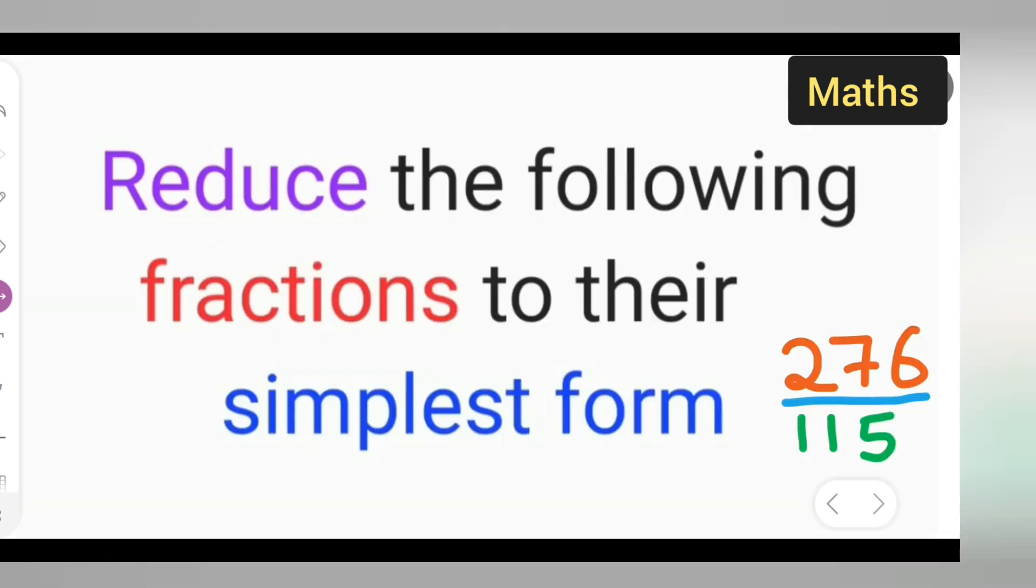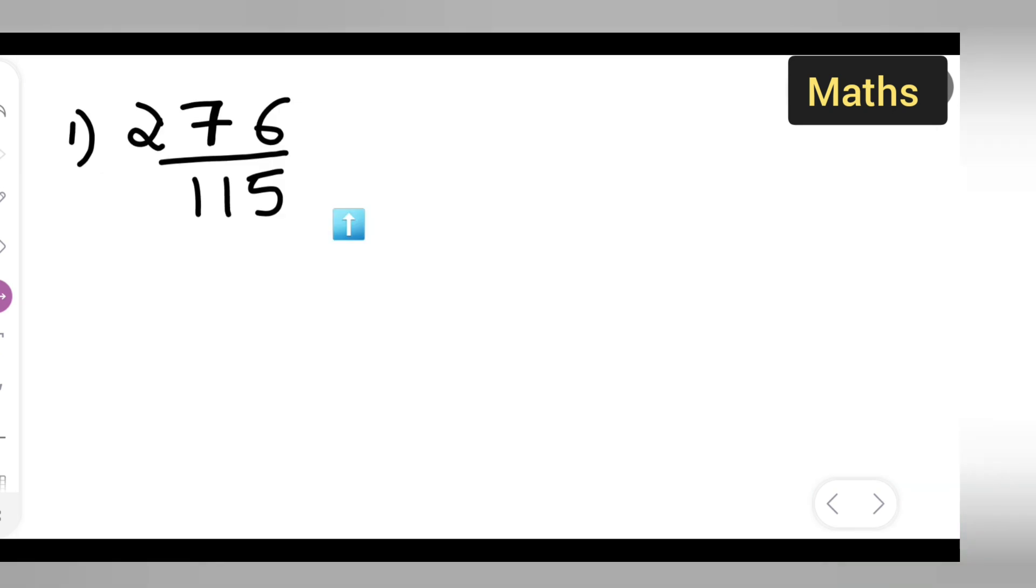We have this number 276 upon 115. So how are we going to reduce this? We have to reduce this to simplest form. Write down 276 upon 115, which is equal to 276 upon 115.